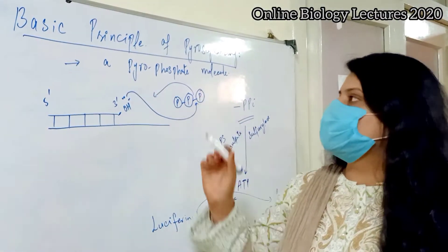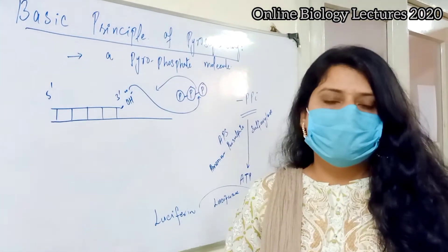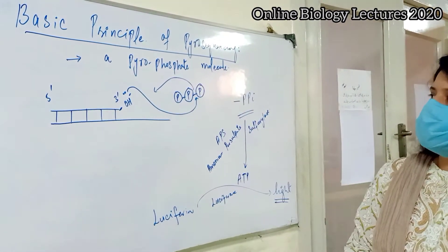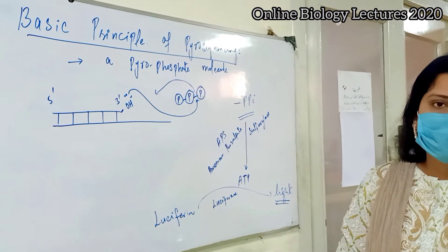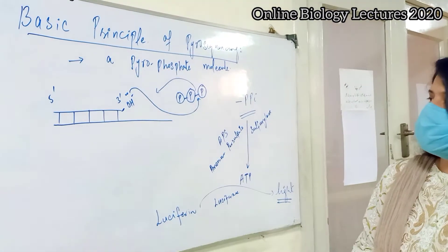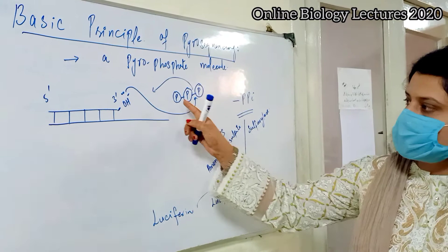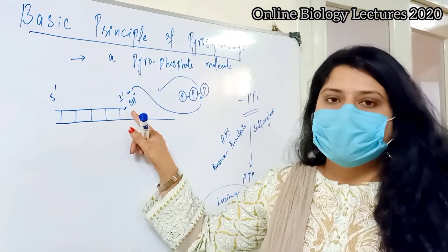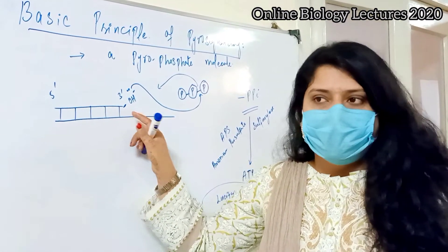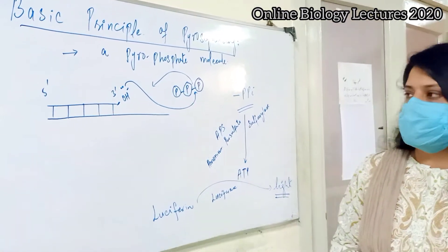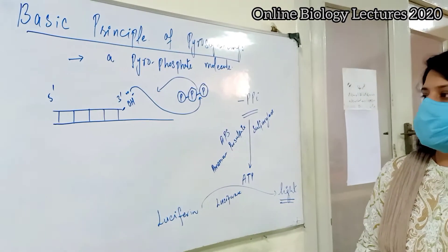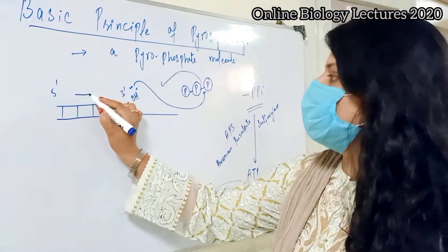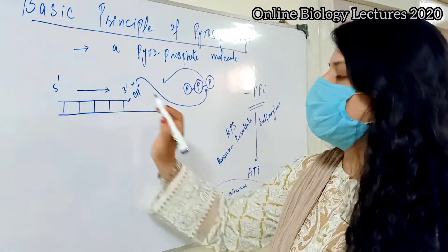The basic principle behind pyrosequencing is the pyrophosphate molecule. Pyrophosphate is released whenever a nucleotide is added at the 3' end of the growing chain of nucleotides. The synthesis of a DNA strand always occurs in the direction of 5' towards 3'.